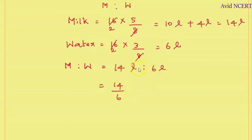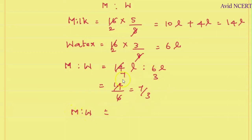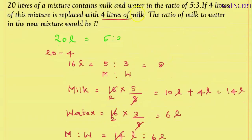To simplify the ratio 14 is to 6: 7 times 2 is 14 and 3 times 2 is 6, so the ratio simplifies to 7 is to 3. Therefore, the ratio of milk to water in the new mixture equals 7 is to 3. Thanks for watching — if you have any doubts, please let me know in the comments.